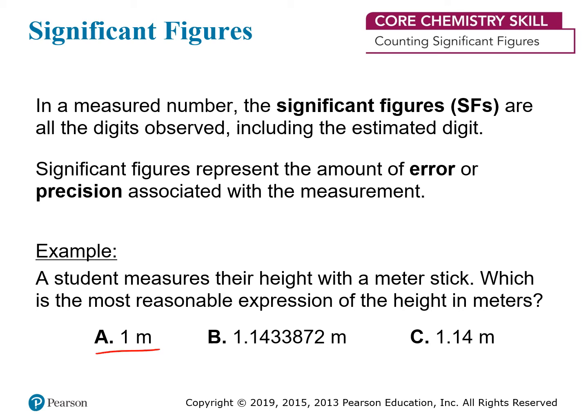The first choice is one meter. But even the crudest meter stick can give a precision down to a half or even a third of a meter, so we would expect one more digit of precision at least — so this one is no good. The next choice is 1.1433872 meters. You should notice that the last digit, the 2, is actually in the ten-millionths place, implying that the student used a meter stick to measure their height with an uncertainty of only a tenth of a micron — something like 10 to 100 times smaller than the width of a human hair. Obviously, this is absurd. The last choice is 1.14 meters, which is actually 1 meter and 14 centimeters. Since most meter sticks have at least centimeter marks, this is a much more reasonable result — more or less equivalent to stating your height to a half an inch.